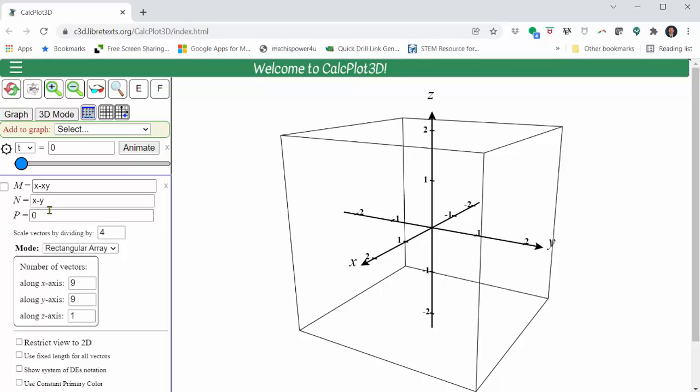So for the first vector field, the x component is negative x. We enter m equals negative x. The y component is y. We enter n equals y. To turn the plot on, we click the box next to the m.